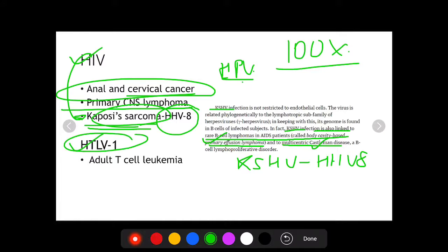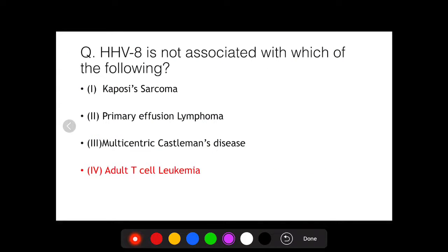While HTLV-1 is human T lymphotropic virus 1, it has been implicated in the pathogenesis of adult T cell leukemia. Now, having discussed this, the next question becomes extremely important. Human herpes virus 8 or Kaposi's sarcoma herpes virus is not associated with which of the following?